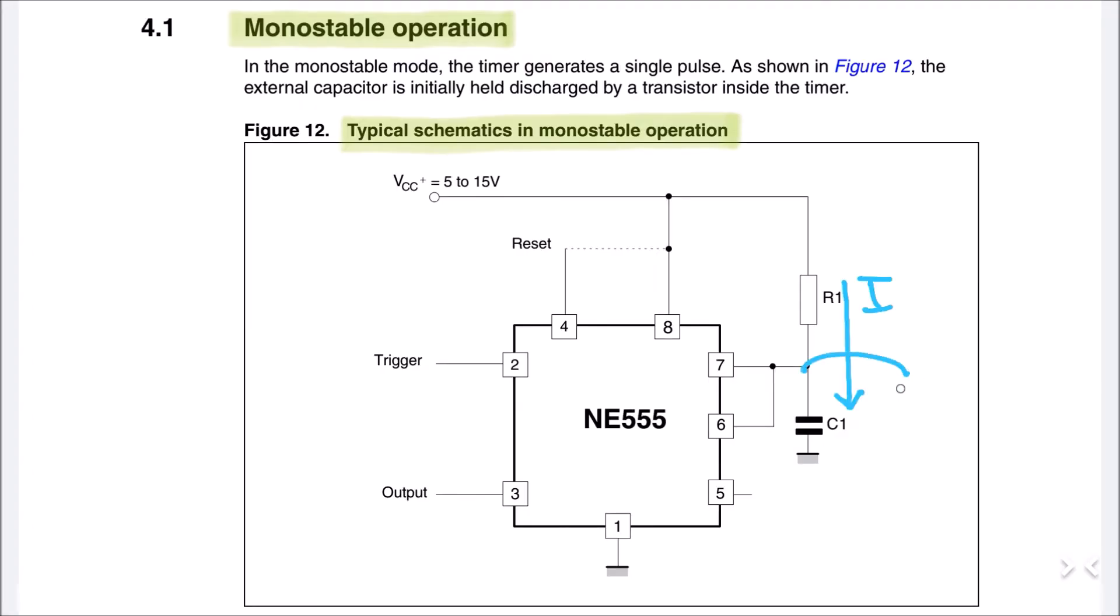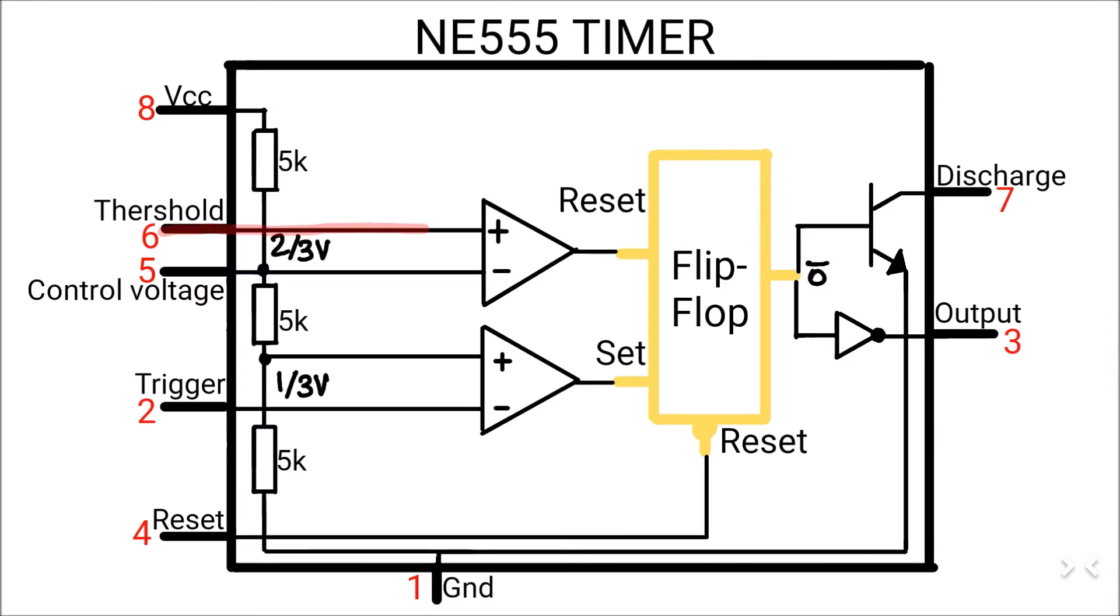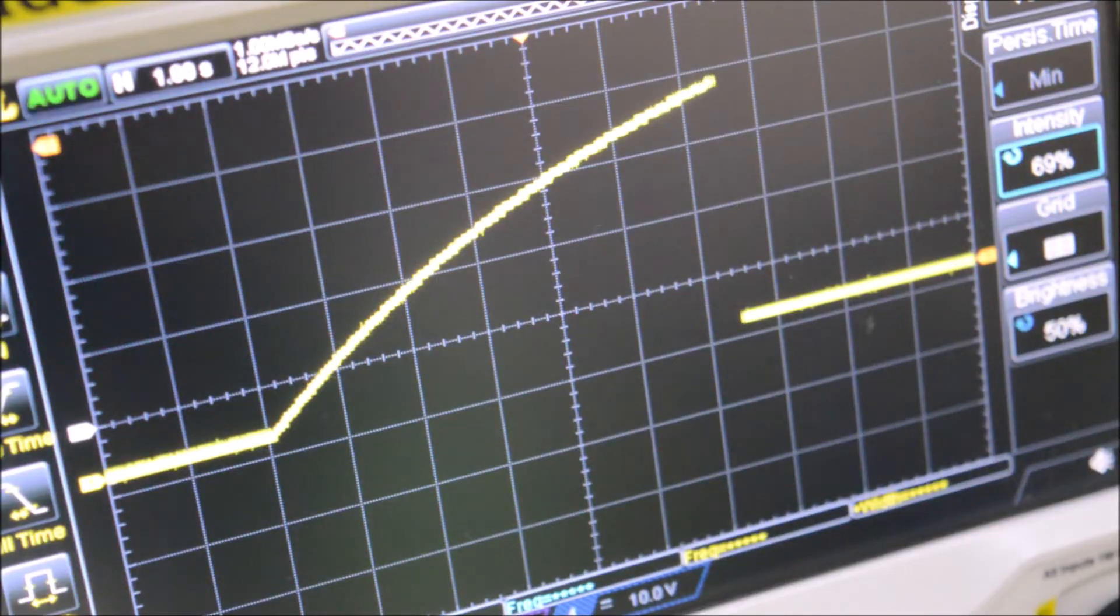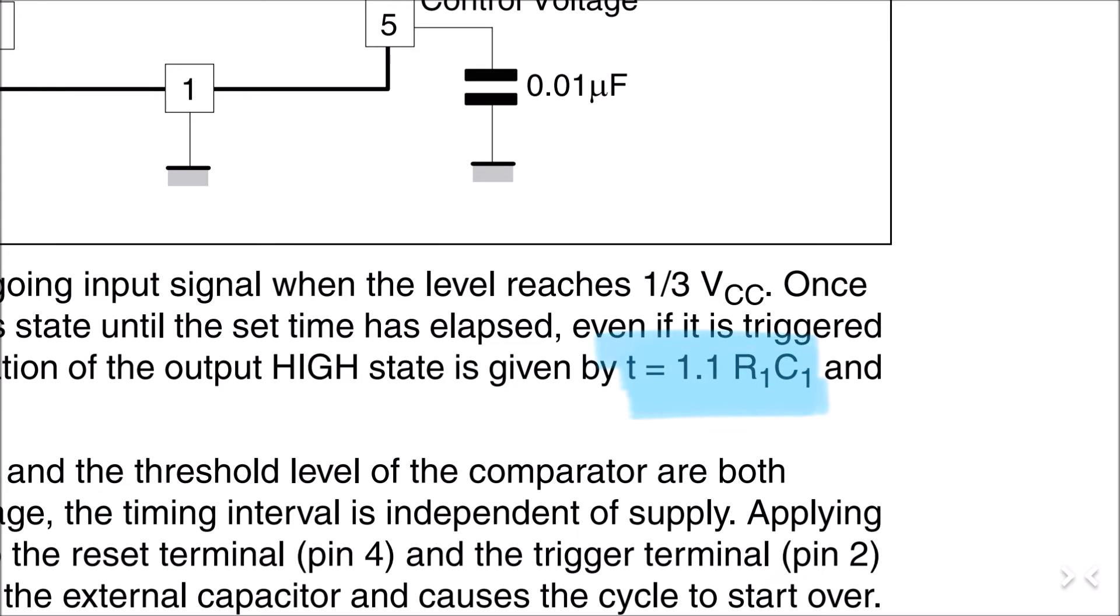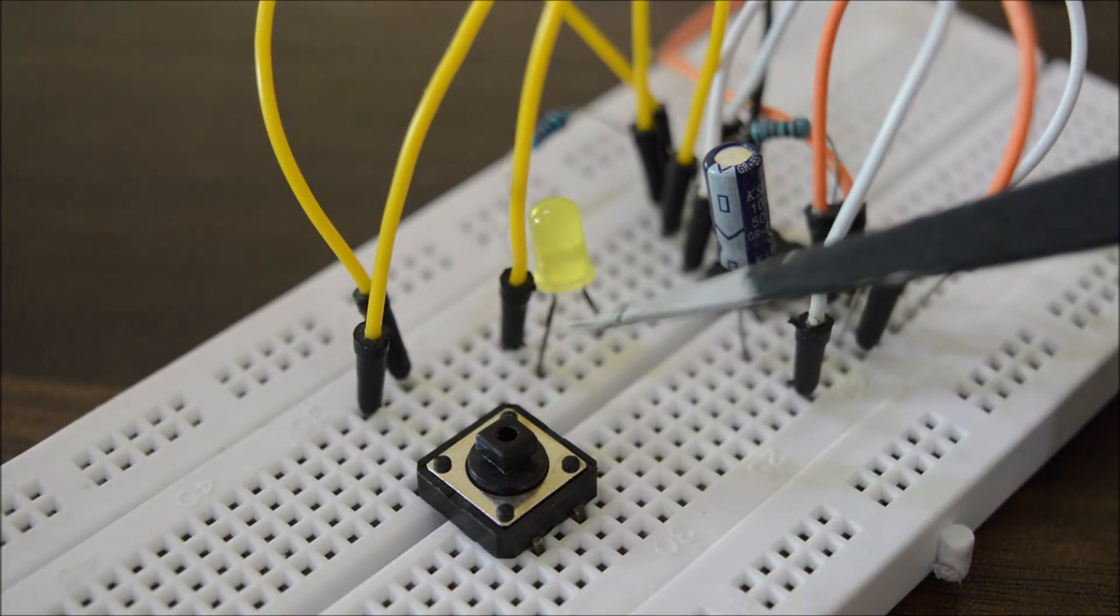But, when the capacitor is charged up to the two-third of the supply voltage, the positive input of the second comparator has higher potential than the negative one, hence the output turns on. This resets the flip-flop and turns the output of the IC off, and ultimately activates the transistor, which immediately discharges the capacitor, because the pin 7 is now connected to the ground, and we are back at the starting point. You can play with the values of resistor and capacitor to generate different output timings according to this formula. This operation is used when you want to give some delay in the output.